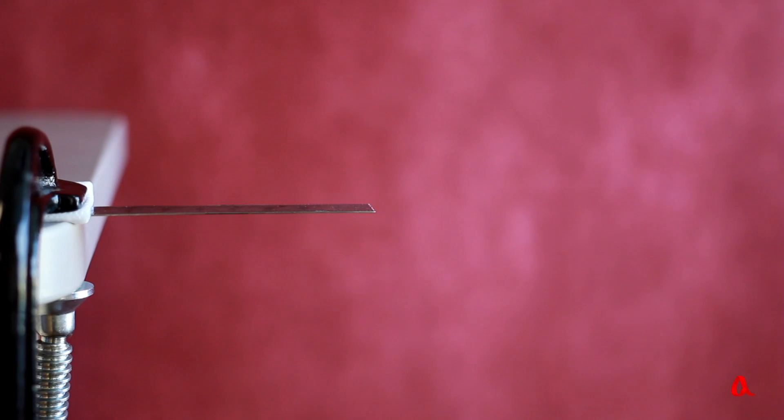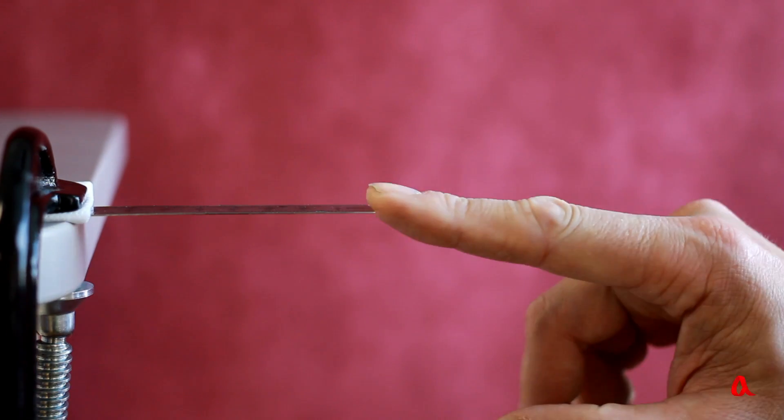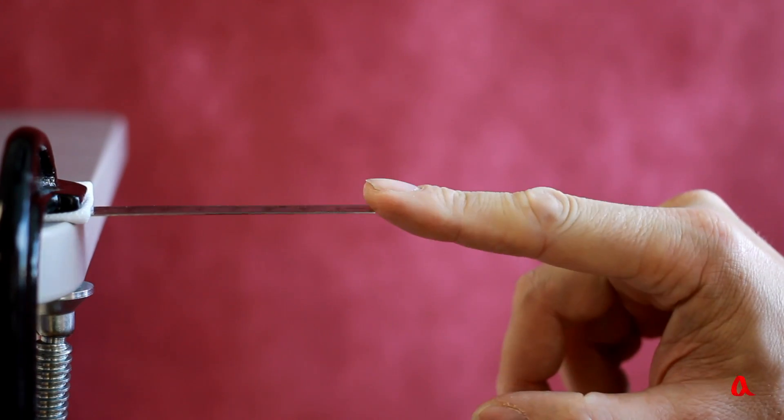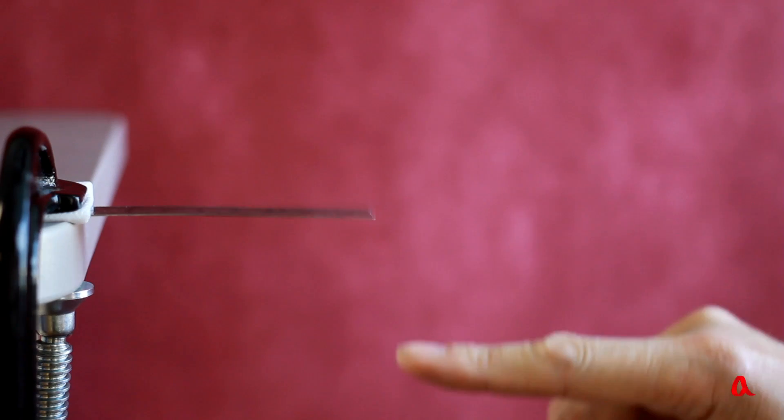We attach a steel ruler to a table, pull its end and let it go. The ruler's end vibrates and collides with the air. The collisions cause the sound to emerge and it reaches our ears.